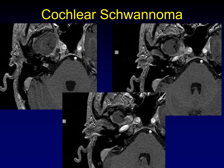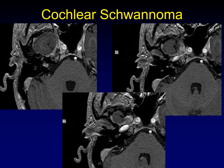Not all schwannomas in the internal auditory canal and cerebellopontine angle cistern arise from the vestibular nerve — some arise from the cochlear nerve. Here we see a tumor filling the fundus of the internal auditory canal that could be called a vestibular schwannoma, but if you look carefully there is enhancement in the characteristic configuration of the basal turn of the cochlea, swinging up into the upper turns on the next cut. When you see enhancement within the cochlea in association with a tumor in the IAC, you're probably seeing tumor spread along the cochlear nerve — this is actually a cochlear schwannoma.